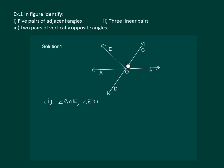Next, EOC and COB are also adjacent angles. So the second pair would be angle EOC and angle COB.